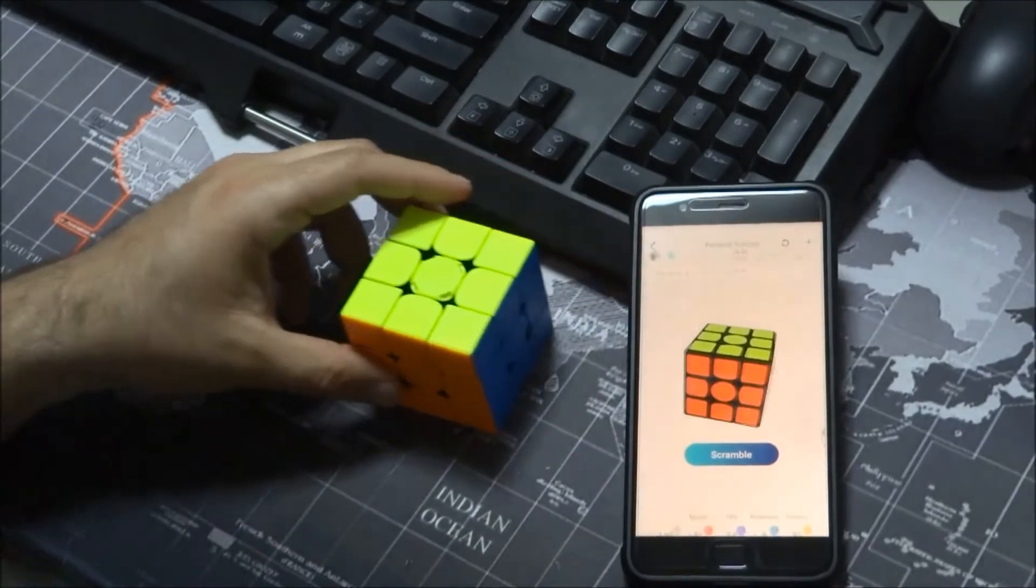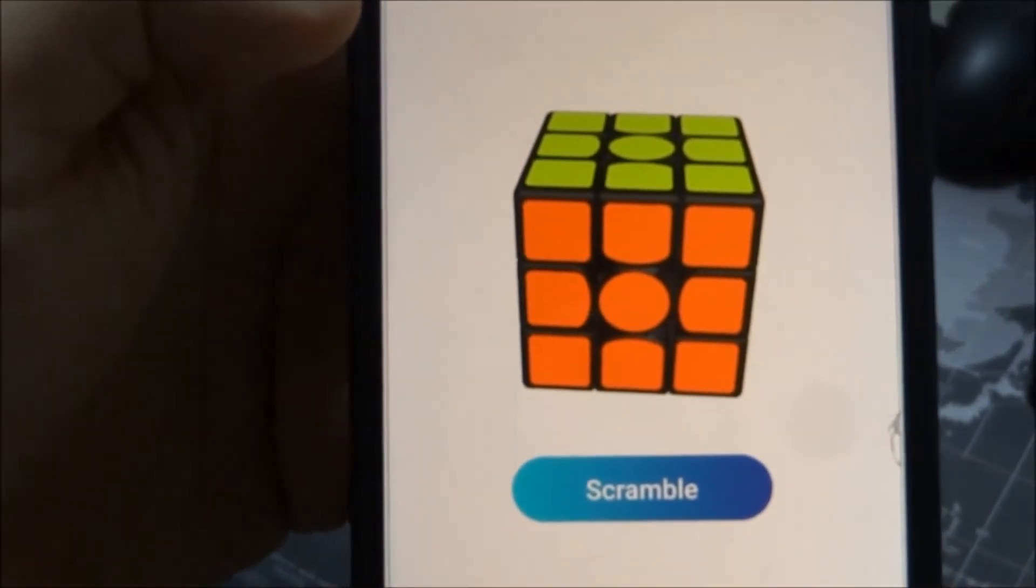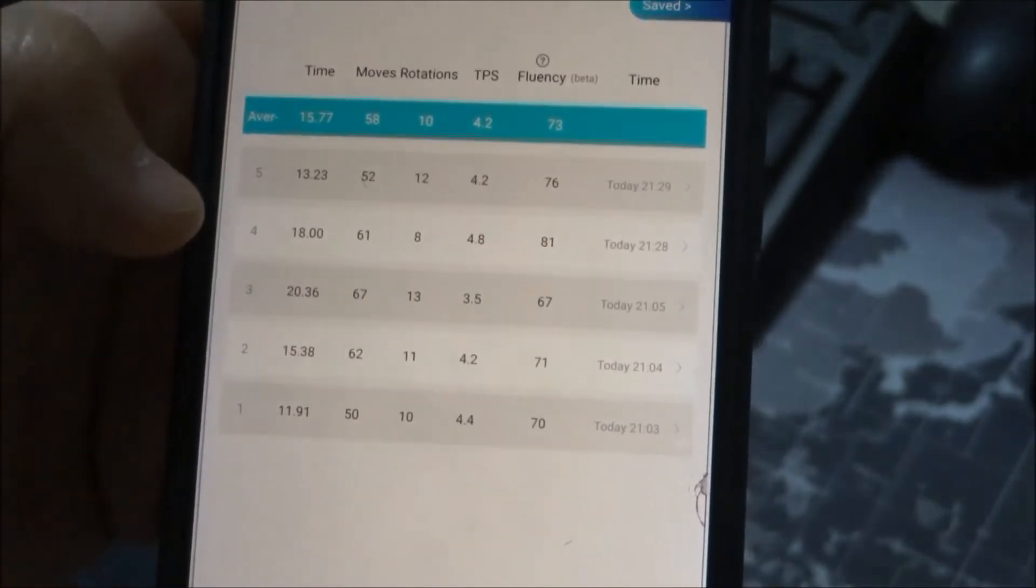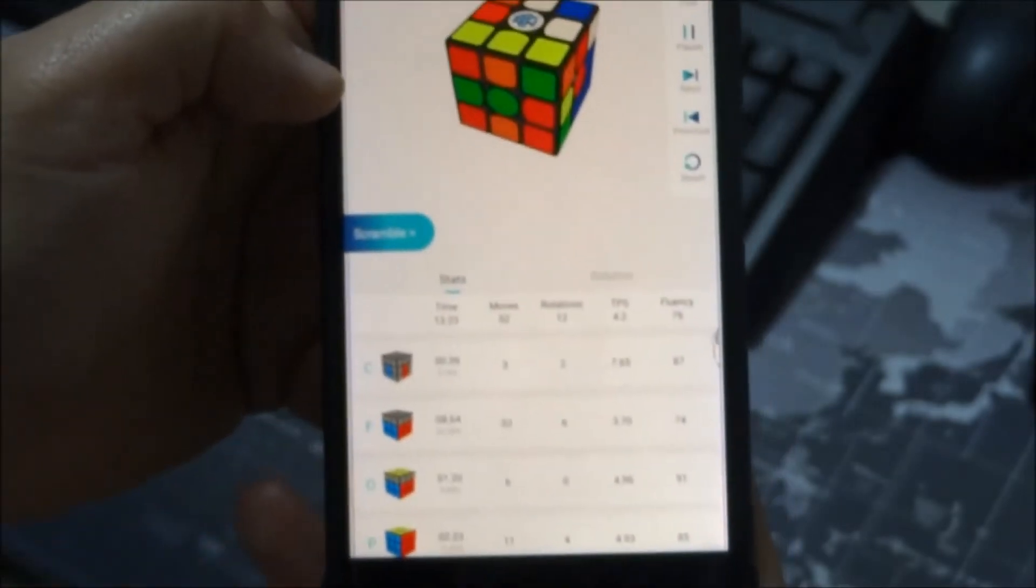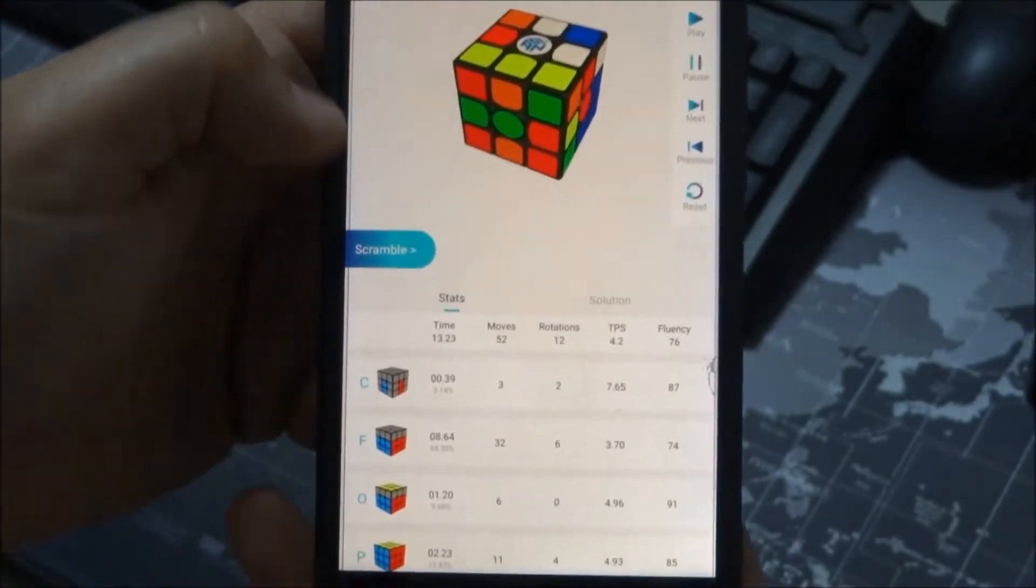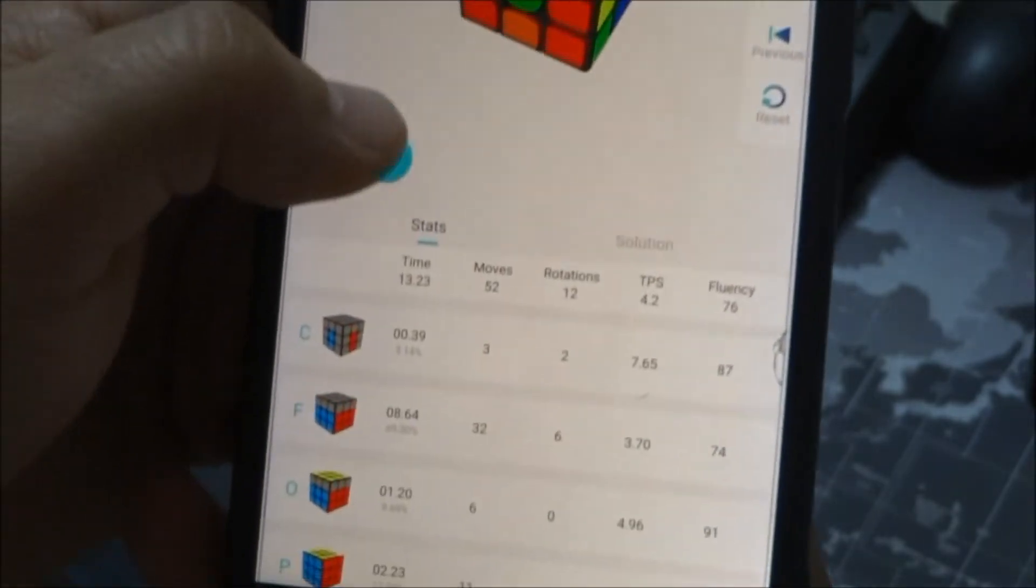And this time it was a decent solve for me. I will try to bring it a little bit closer so you can see. If I go, this is like all the history of the solve. If I click one, and that, here we go. You can actually see the scramble, see the beginning of the solve.